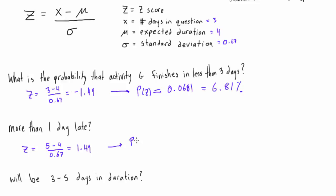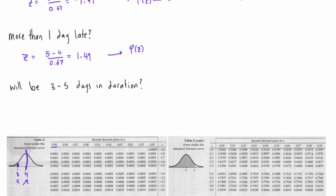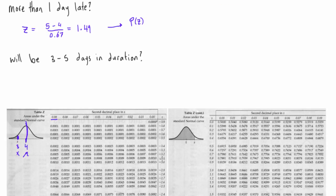Now we need to look up the probability of this z-score. We're on the positive z-scores now, so we locate 1.4 and then 0.09 — combining those gives positive 1.49. We see where they intersect and that gives us a value of 0.9319.